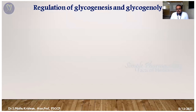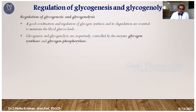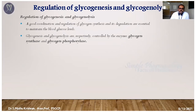The next topic is the regulation of glycogenesis and glycogenolysis. Both pathways operate by different mechanisms. When there is excess glucose, it is stored as glycogen. Under starvation, stored glycogen breaks down to produce glucose for energy. Therefore, coordination between glycogen synthesis and glycogenolysis is essential.